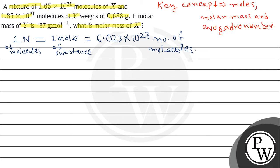तो यहाँ पर जो question में दिया गया है: 187 gram of Y equals 1 mole — क्योंकि यहाँ पर जो molar mass दिया गया है वो है 187 gram per mole। तो इसका मतलब this equals 6.022×10²³ number of molecules। हम 6.022 लेते हैं।